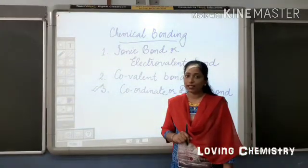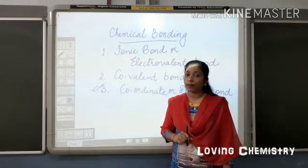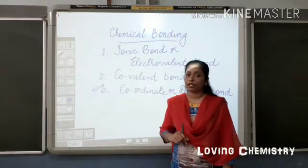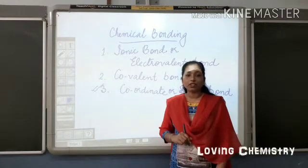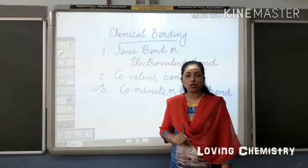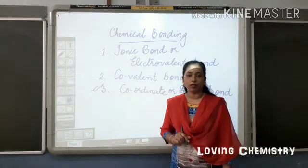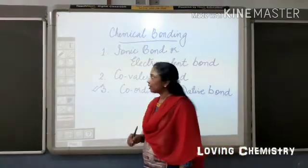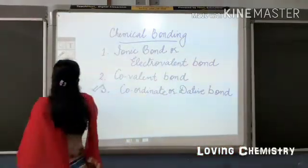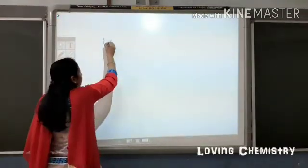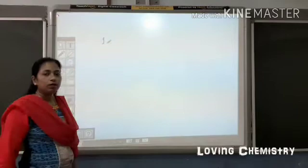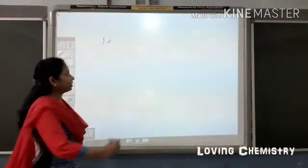We said that ionic bond is formed by the complete transfer of electrons. And how many electrons can an atom transfer? One, two or three. Not more than that. So let us see how atoms do that.